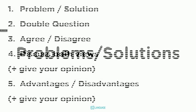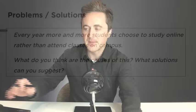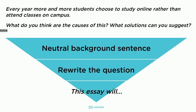Let's look at problem and solutions first. Imagine this is what you see on test day. It says: 'Every year more and more students choose to study online rather than attend classes on campus. What do you think are the causes of this? What solutions can you suggest?' You need to be able to write the introduction of your essay just like that — because you know the E2 Language introduction. So let's apply this. On top you'll see the question, and then you've got the neutral background sentence, rewrite the question, and 'this essay will.'